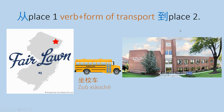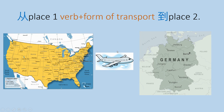How would we say, I from home, or 家, take the school bus to BCA, or 学校? 我从家坐校车到学校. How would we say, I from America take an airplane to Germany? 我从美国坐飞机到德国.